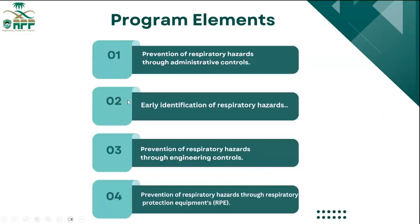What are the elements of the RPP? It consists of four main elements: first, prevention of respiratory hazard through administrative control; second, early identification of respiratory hazard; third, prevention of respiratory hazard through engineering control; and fourth, prevention of respiratory hazard through respiratory protection equipment. All of these elements have sub-elements, which will be explained in the next slide.